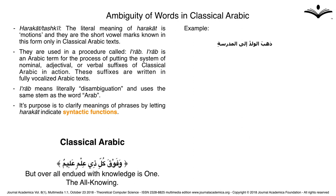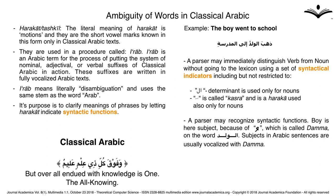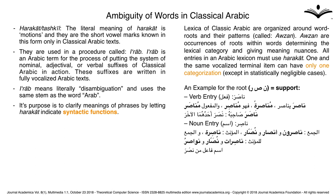In the sentence 'dhaab alwaladu ilal madrasati' — the boy went to school — a parser may immediately distinguish verb from noun without even going to the lexicon, using a set of syntactical indicators including 'al,' which is a determinant used only for nouns, and kasra, a haraka used only for nouns. A parser may also recognize syntactic functions: 'boy' is the subject because of the small sign called dhamma on the word alwalad. Arabic lexica are organized around word roots and their patterns called awzan. All entries in an Arabic lexicon must use harakat, so one and the same vocalized terminal item can have only one categorization — with statistically negligible exceptions.